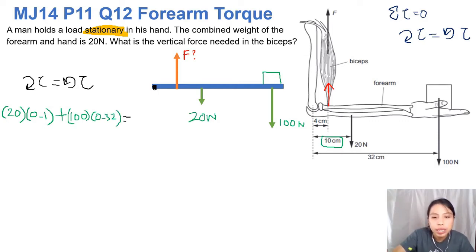That equals to anticlockwise. We don't know what that is yet. So we'll just say F times some distance, 4 cm only, wow, very short, 0.04. Okay, so we plug in our calculator to see what we get for F. Let me just plug it in: (20)(0.1) + (100)(0.32) divide by 0.04... 850 newtons. 850 newtons.